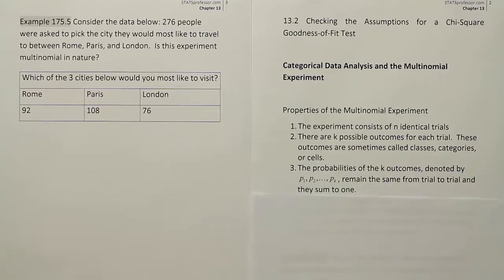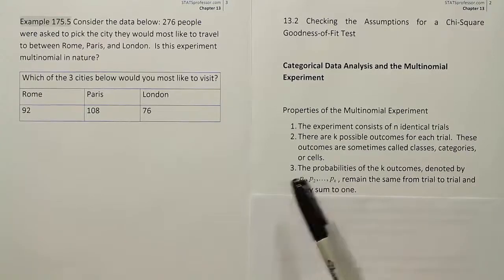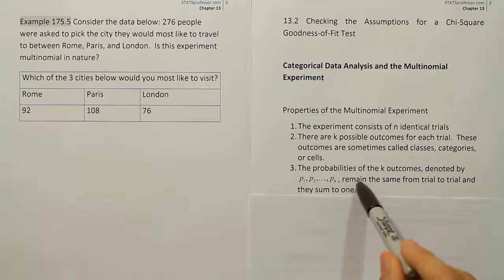All right, let's go down to the third condition. Third condition is the probabilities of the, in this case three outcomes denoted by probability of Rome, probability of Paris, probability that select London should remain the same from trial to trial and they should add up to one.